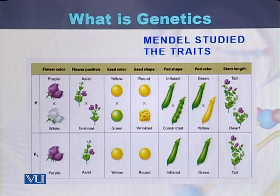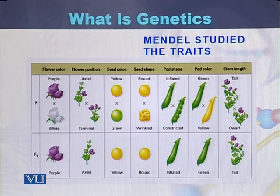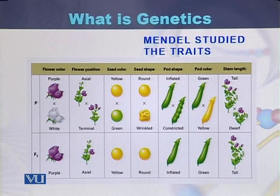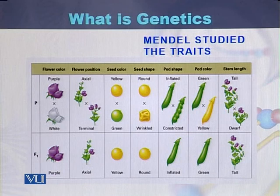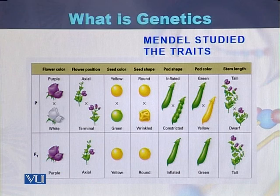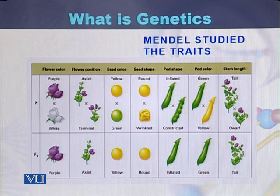The characteristics of the garden pea used by Mendel include: flower color — purple and white; flower position — axial and terminal; seed color — yellow and green; seed shape — round and wrinkled; pod shape — inflated and constricted; pod color — green and yellow; and plant height — tall and short.